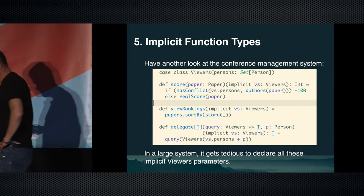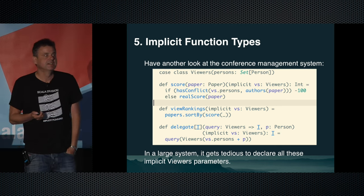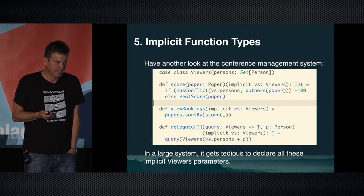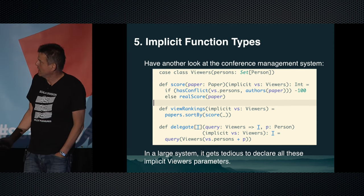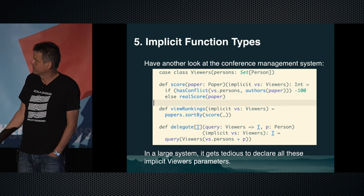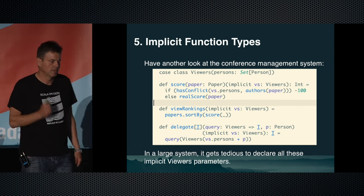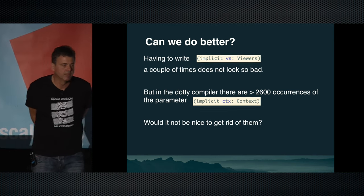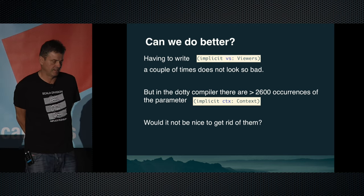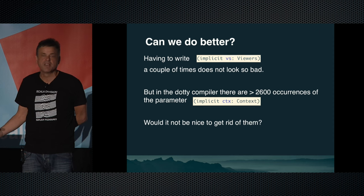The last thing, and the thing that excites me most, is implicit function types. In the Dotty compiler, we have more than 2600 occurrences of the string 'implicit ctx: Context'. It would definitely be nice to get rid of them. Let's look at the conference management example — functions like viewRankings have implicit parameter sections. Instead of writing it as a method, I can write it as a parameterized lambda on the right-hand side with 'implicit vs: Viewers', making it a closure where vs is automatically passed to score.